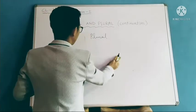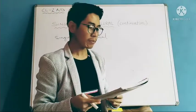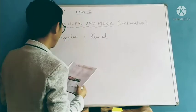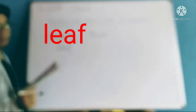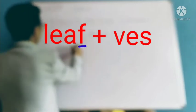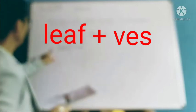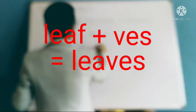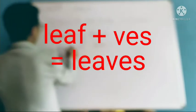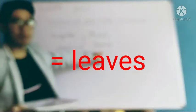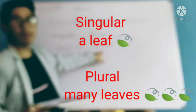Now, in the book on page number 23: some nouns that end in F or FE are made plural by removing the F or FE and adding VES. For example, the word 'leaf' ends with F. We remove the F, add VES, and the spelling becomes L-E-A-V-E-S — 'leaves'. So one leaf, many leaves.